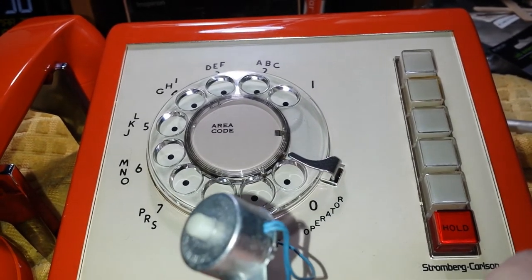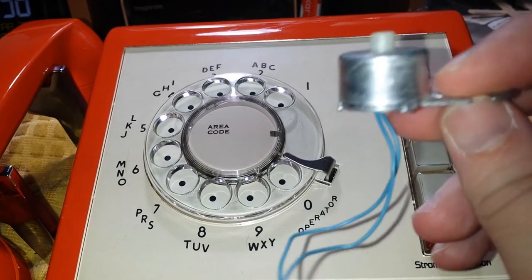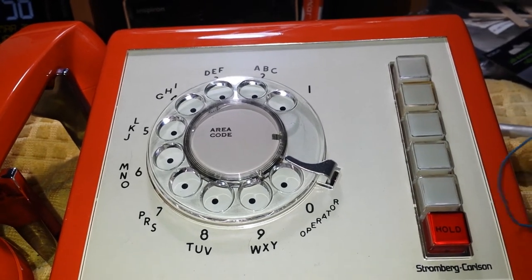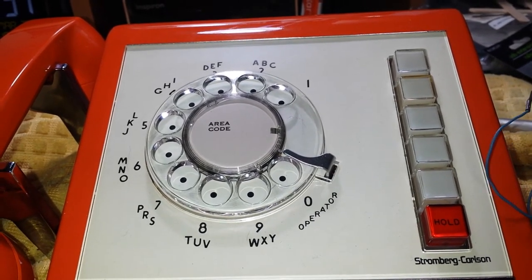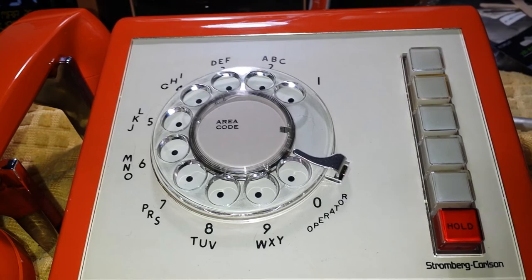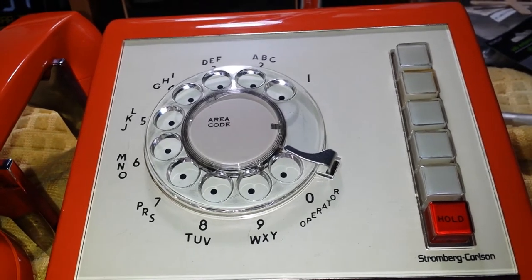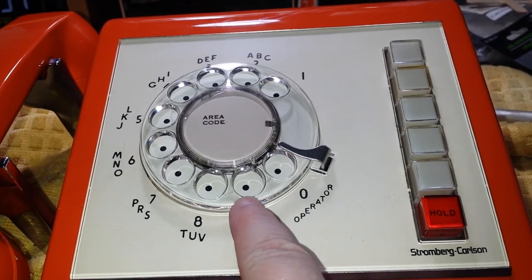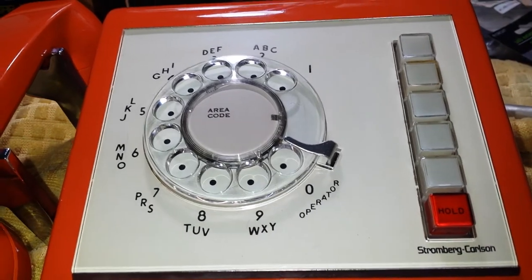I can't tell if this was a Bell system buzzer or not, because they did have third party manufacturers to make buzzers. Basically, all 1A2 key system stuff is compatible. For instance, you can take this dial off and you can put it on the Russner Electric telephone.